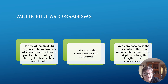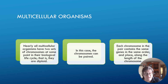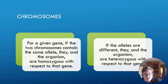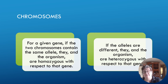Nearly all multicellular organisms — which includes us — have two sets of chromosomes at the same point in their biological life cycle; that is, they are diploid. The chromosomes can be paired: each chromosome in the pair contains the same genes in the same order and at the same place along the length of the chromosome. For a given gene, if the two chromosomes contain the same allele, the organism is homozygous with respect to that gene. If the alleles are different, the organism is heterozygous with respect to the gene.